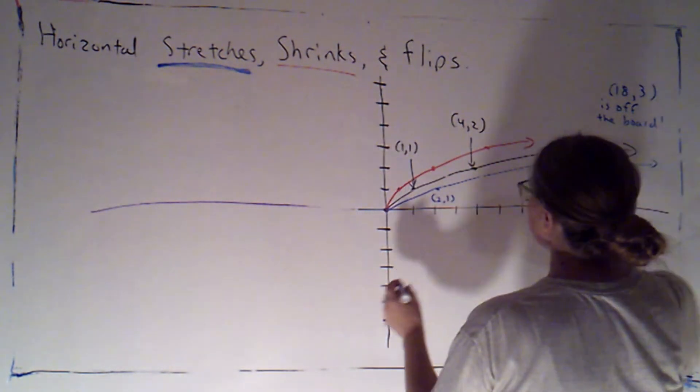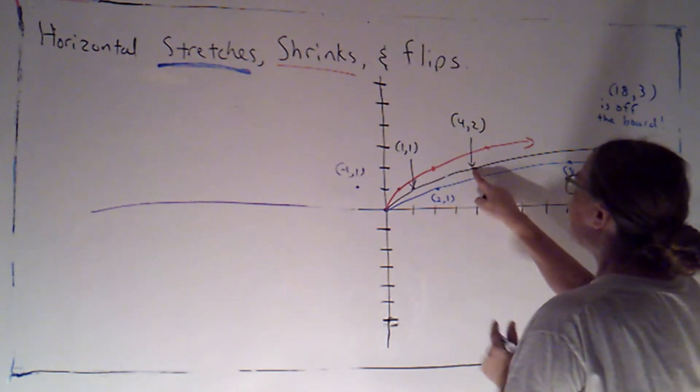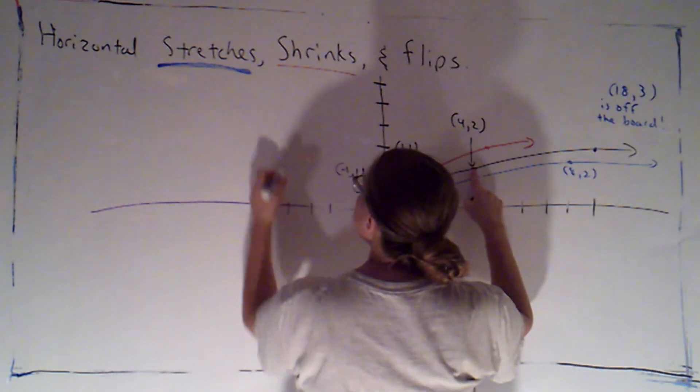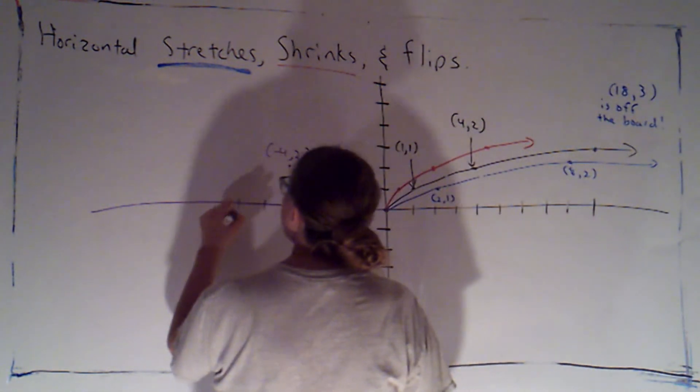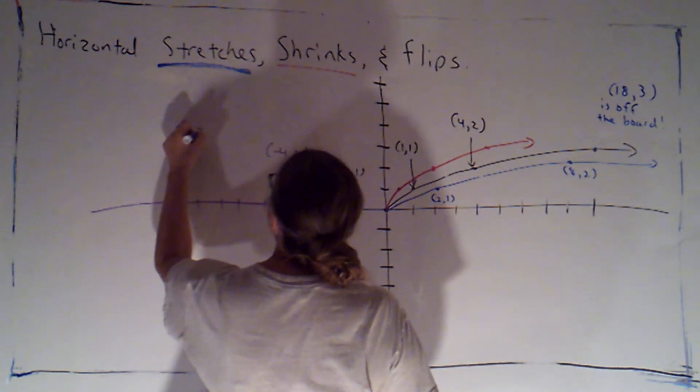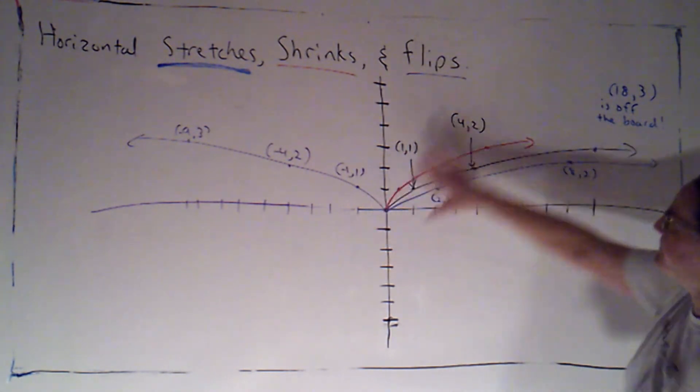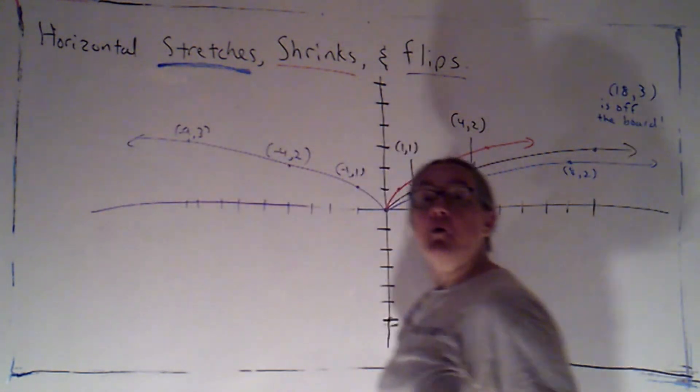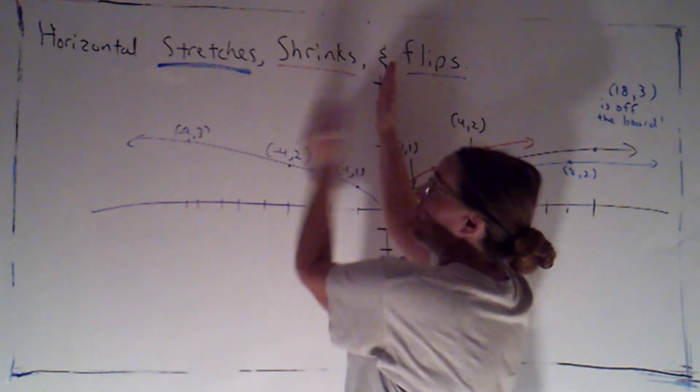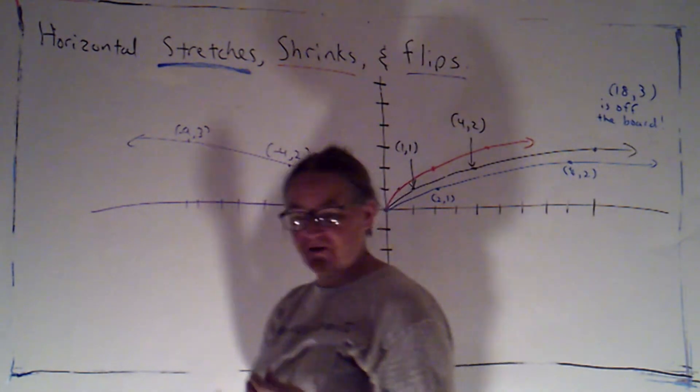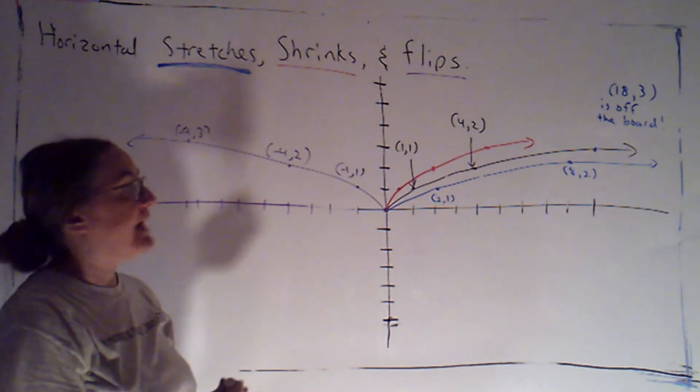So what's going to happen is this was my parent graph. Now here was the point (1, 1). Now I'm going to have a point (-1, 1). Here was the point (4, 2). Now I'm going to have a point (-4, 2). Here was the point (9, 3). Now I'm going to have a point (-9, 3). And you can see what we've accomplished is a horizontal flip. Instead of opening to the right, now it's opening to the left. Notice a horizontal flip is a flip across the vertical y-axis. So it changes the graph horizontally by flipping it or reflecting it, is another thing we could say, across the y-axis, changing the x values but still having the same y values.